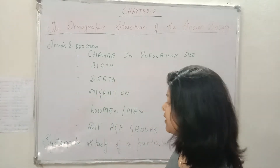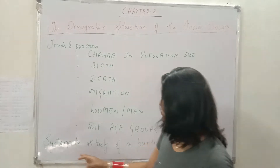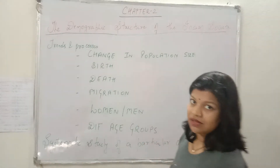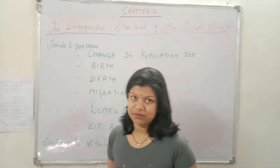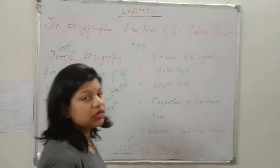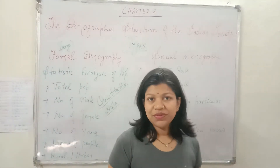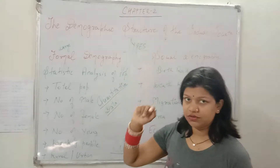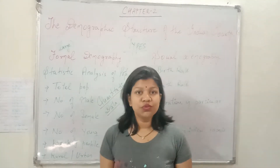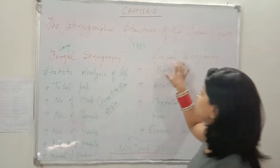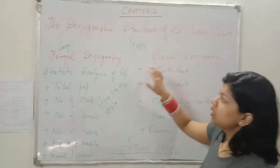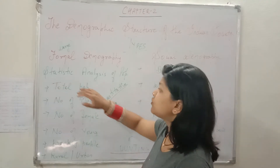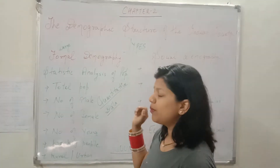So what is demography? Demography is a systematic study of a particular area and its people. Now let's learn about the types of demographic structure. It is of two types: formal and social. Formal means it involves the statistical analysis of population.